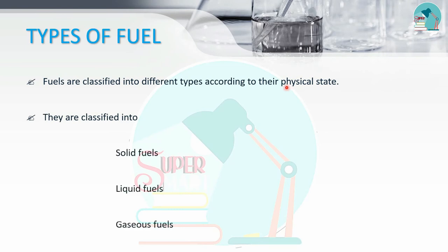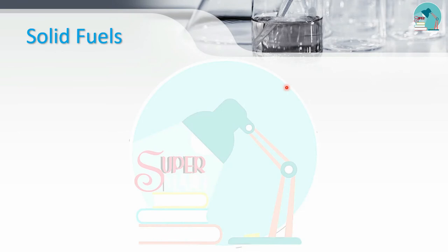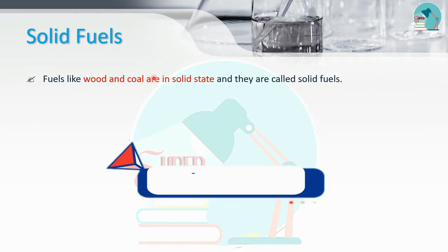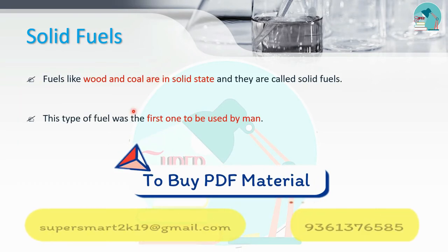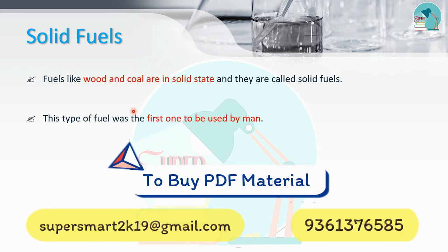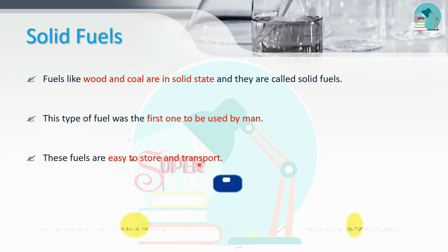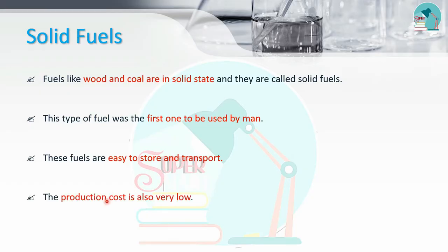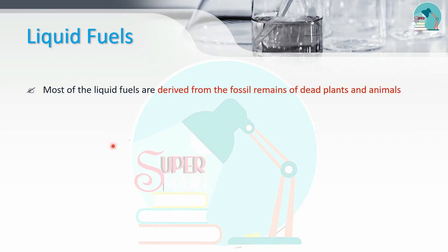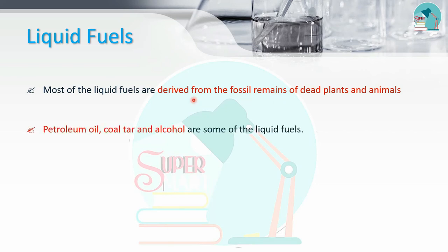Solid fuels include wood and coal. These were the first fuels used by humans. They are easy to store and transport, and their production cost is very low. Liquid fuels are derived from dead plants and animals through decay. Examples include petroleum, oil, coal tar, and alcohol.